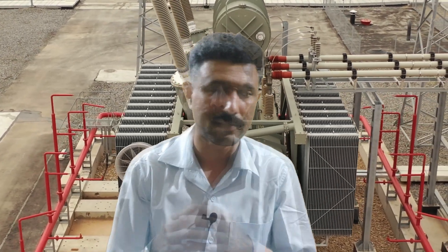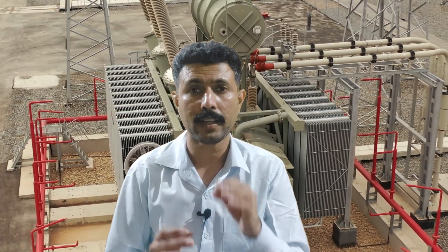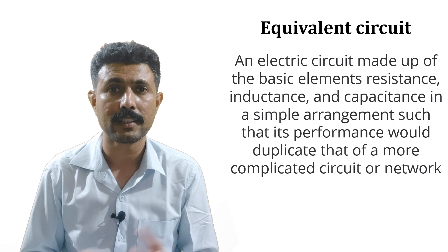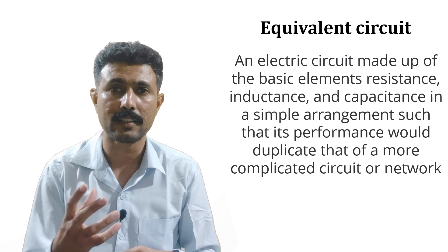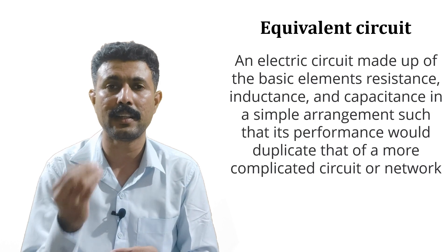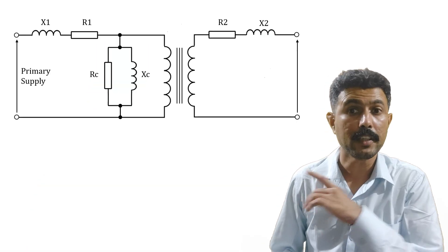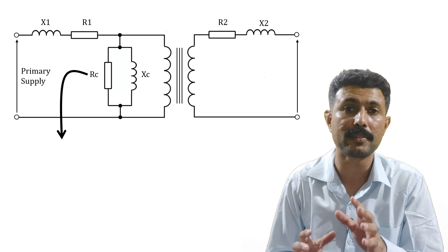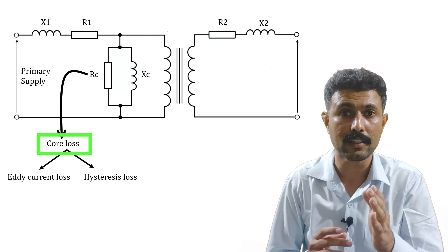Now we are heading towards the second question: why does the winding burn out? To understand this, let's look at the equivalent circuit of a transformer. The equivalent circuit is a simplified circuit representing the resistance of the winding, inductance of the winding, core loss, and copper loss, all in resistance and inductor form. The RC resistance in the equivalent circuit represents the core loss of the transformer, which consists of eddy current loss and hysteresis loss. This core loss depends on frequency, and the frequency of DC is 0 Hz, so the core loss becomes zero — we can remove that component.